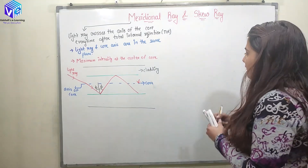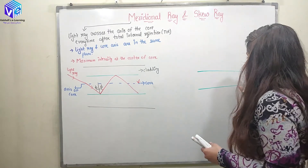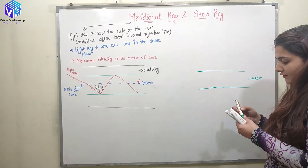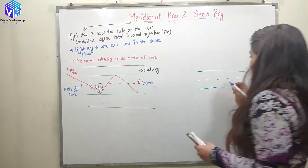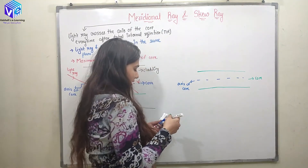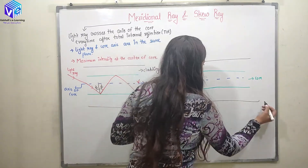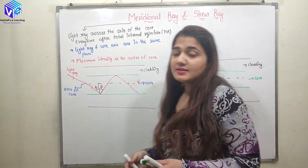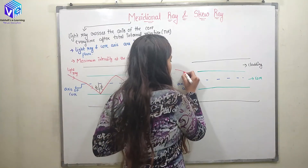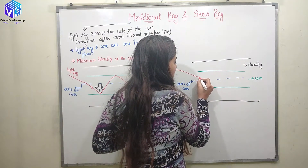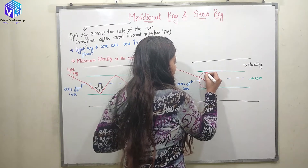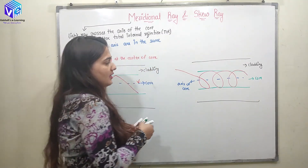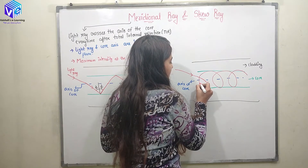Now coming to the skew ray. Again we have the optical fiber — here I have the core, and again I have the axis of the core, and then I have the cladding. Now how does the light travel in this kind of light ray? If I send the light inside, the light is going to follow a helical structure. You can see the light is following a ring or spring-type structure — the light ray is rotating.